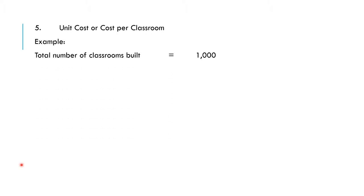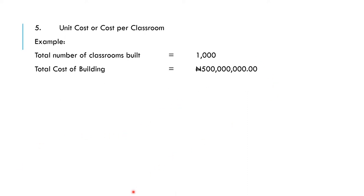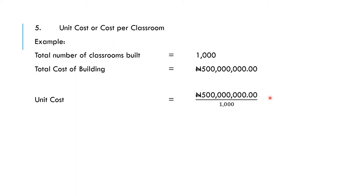Now let's look at the unit cost per classroom. Assume the total number of classrooms built is 1,000 and the cost of building them is 500 million naira. The unit cost is 500 million divided by 1,000, which means for each classroom, 500,000 naira was spent.